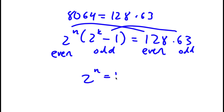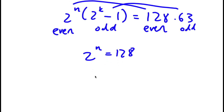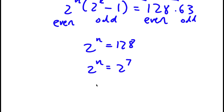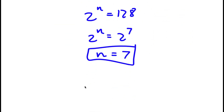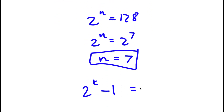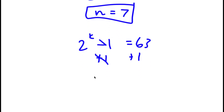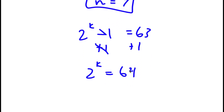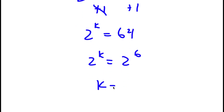So 2 to the power of n equals 128. Since 128 is 2 to the power of 7, we get n equals 7. Now for the odd part, 2^k minus 1 equals 63. Adding 1 to both sides gives 2^k equals 64. Since 64 is 2 to the power of 6, we get k equals 6.